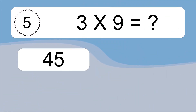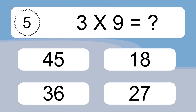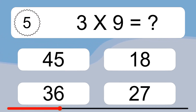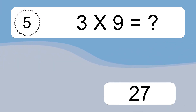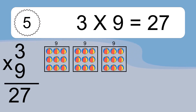3 times 9 equals what? 3 times 9 equals 27.